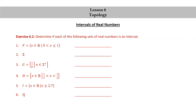F equals the set of real numbers x such that 0 < x ≤ 1. This is an interval. Z, the set of integers, is not an interval — for example, 0 and 1 are integers, but 1/2 is between 0 and 1 and 1/2 is not an integer.